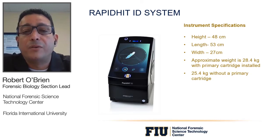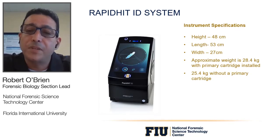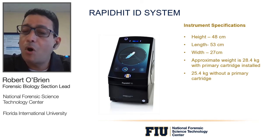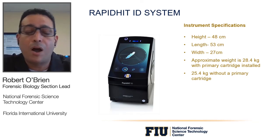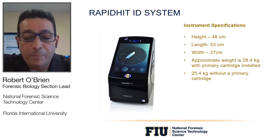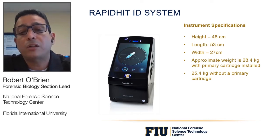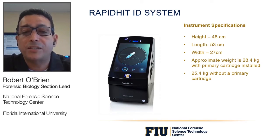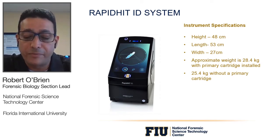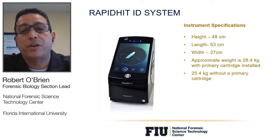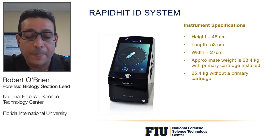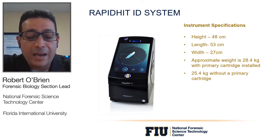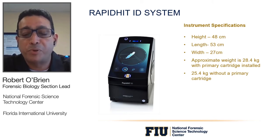Now we're going to look at the RapidHit ID system. The height is about 48 cm, the length is 53 cm, and the width is 27 cm — very small and easily placed in nearly any room, whether a laboratory or booking station. The approximate weight is 28.4 kg with the primary cartridge installed, and 25.4 kg without. The only additional space requirement may be for a laptop, but data can be sent to a centralized location, so many instruments could be placed alongside each other — expanding capability without requiring much space.